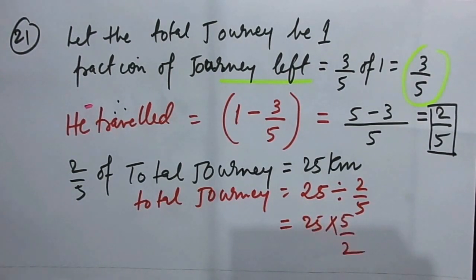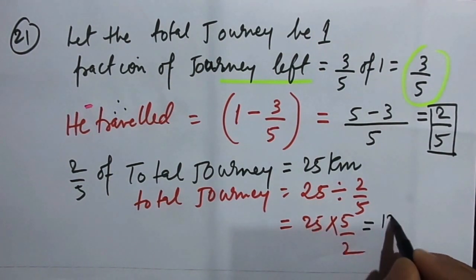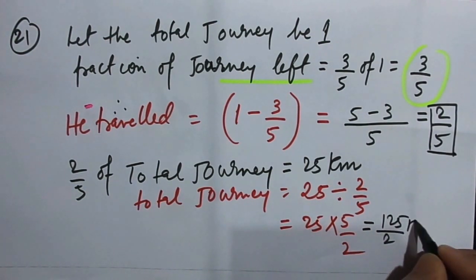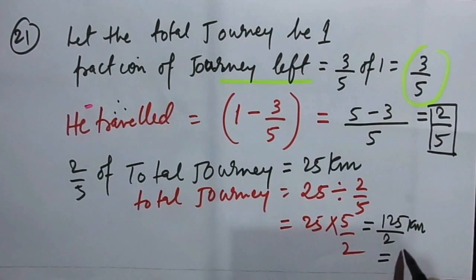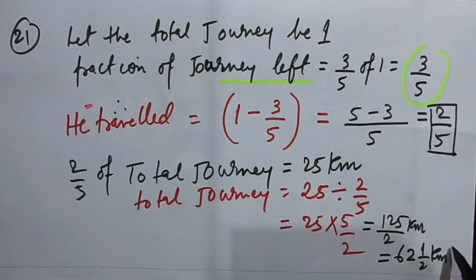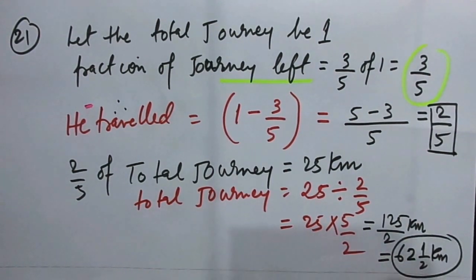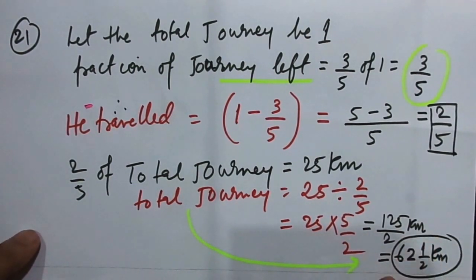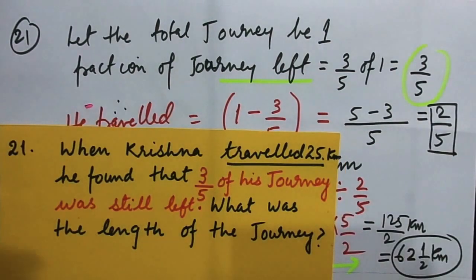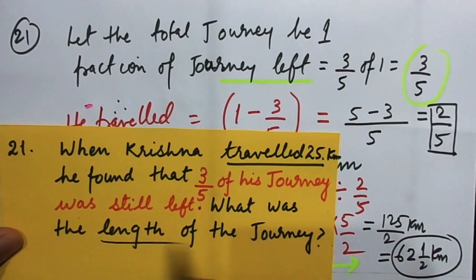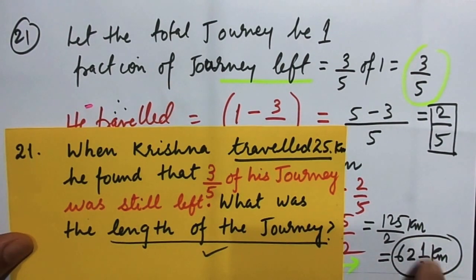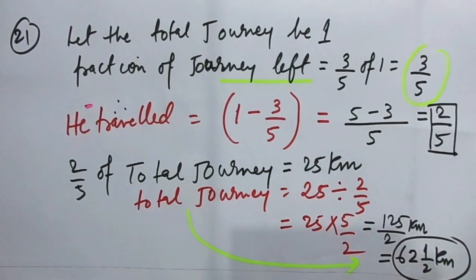Because we are transposing, it is equal to 25 multiplied by 5 by 2. Since it will not get cancelled, I'll get 125 by 2 kilometers, which as a mixed fraction is 62 and 1 by 2 kilometers. So the total journey is equal to 62 and 1 by 2 kilometers — that is the length of the journey.